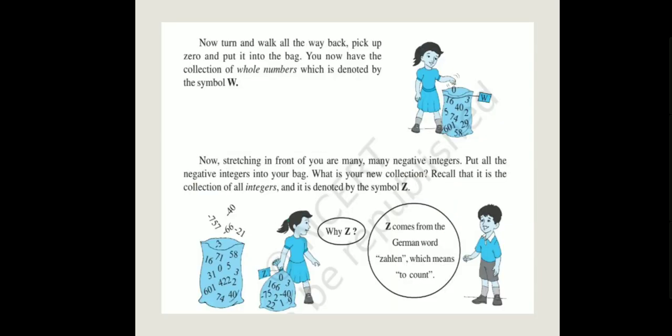Now, about W. W is the symbol, friends. Now, turn and walk all the way back. You are walking on a number line. Then, you go straight on the right side. Then, you collect all the natural numbers on the number line. Now, you turn back and walk all the way. Pick up 0 and put it into the bag. So, friends, you can see. Natural numbers was in our bag. Now what did we do? We pick 0 from on the number line and put it into the bag. Now, we have new collection. You know, have the collection of whole numbers, which is denoted by the symbol W.